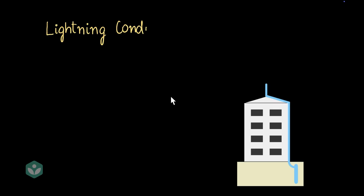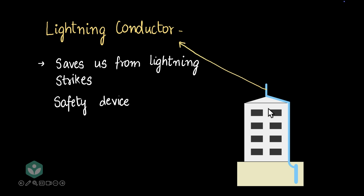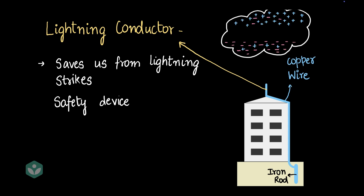A lightning conductor is basically a safety device that saves us from lightning. Here's our building — the lightning conductor is the rod on top of the building, usually made of copper and connected to the ground through a copper wire. Below the ground, we place an iron rod. Now, when a dangerous cloud with separated charges is overhead, the negative charges in the lightning conductor would move down, leaving an excess of positive charges on the lightning conductor.